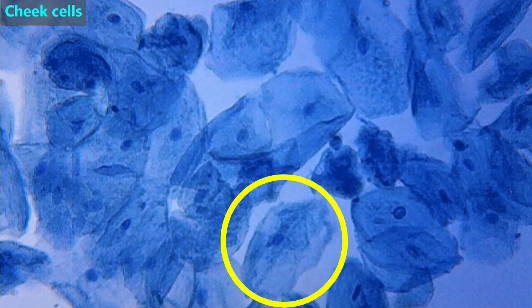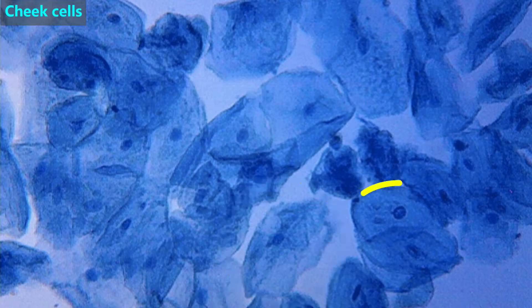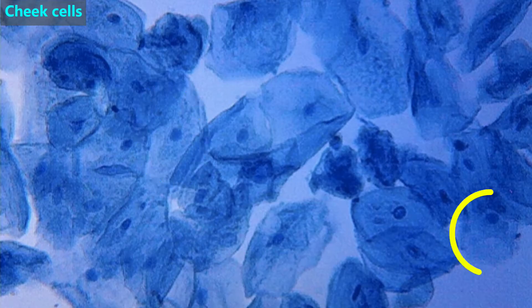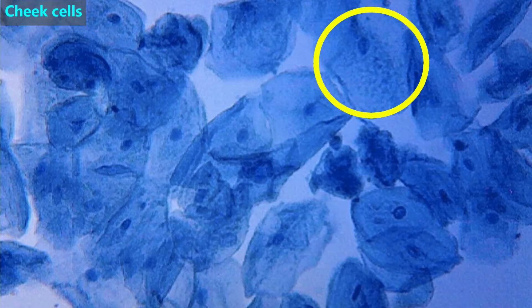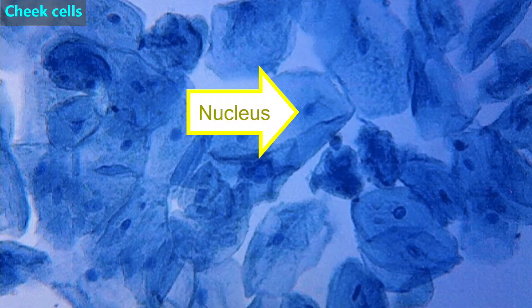Here's an image of cheek cells that were taken from a person by gently wiping a device on the inside of the mouth. They've been stained with blue dye, so we can see them more easily. Since they've been removed from the cheek, they're not connected to each other in an orderly manner like the plant cells are. But just like the plant cells, we can see that each of these cells is small and has a nucleus.